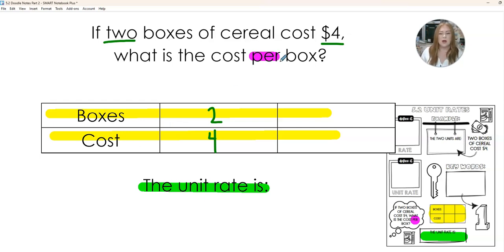We want to know the cost per box, per one box. So I'm looking for the boxes - I want one box. We're trying to find the cost. Now we're just going to use that same strategy to transfer this number over here. So how do I get from two to one?